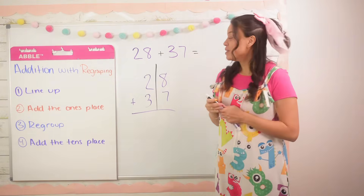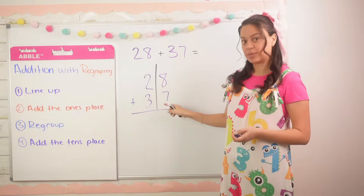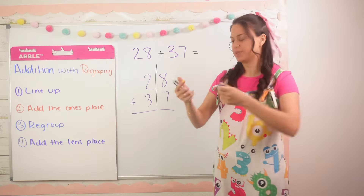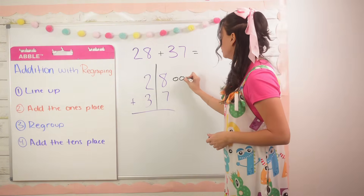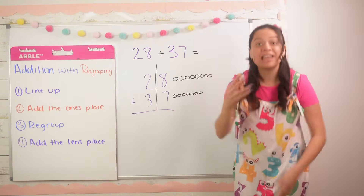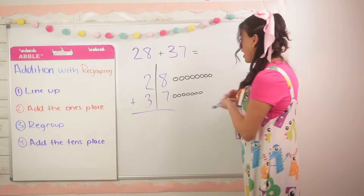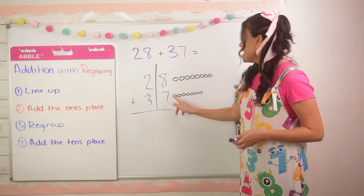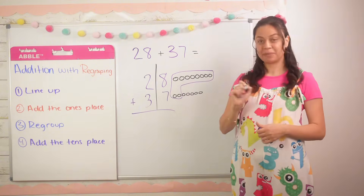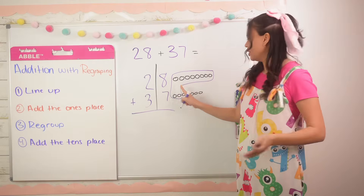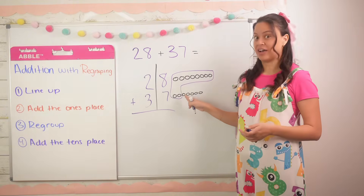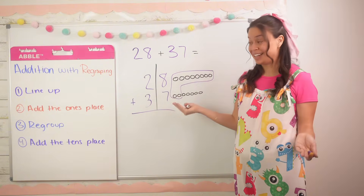Step two: add the ones place. I have 8 ones plus 7 ones. I'm going to draw out 8 ones and 7 ones so you can see how we're going to regroup. Now I'll see if I can make a ten. I already have 8 ones — 8, 9, 10 — I found a ten! I'll circle it off. How many ones do I have left over? 1, 2, 3, 4, 5. So I have one ten and five ones — 8 plus 7 equals 15.